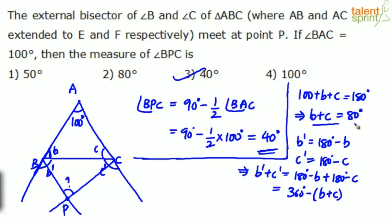B plus C we have already calculated. How much is that? 80. You're getting it? B plus C is 80. So substitute that 80 here. So after substituting, what do we get? B dash plus C dash is equal to 360 minus 80, which is 280 degrees.